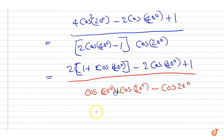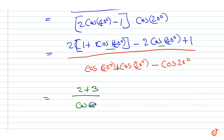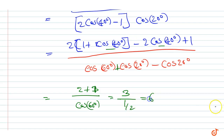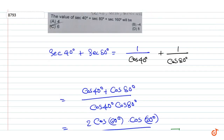Sorry, this is plus here, so the terms get cancelled. The remaining is 2 + 1 = 3 upon cos(60°), equal to 3 upon 1/2, equal to 6. Therefore the correct answer is 6.